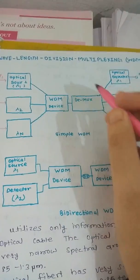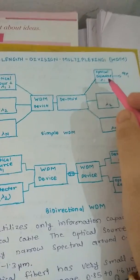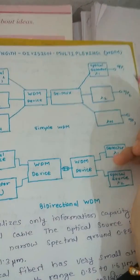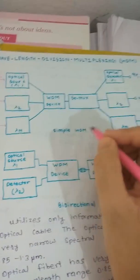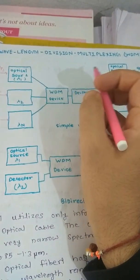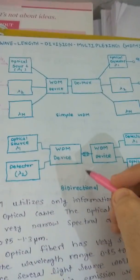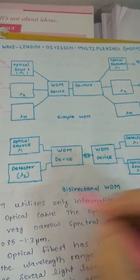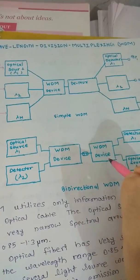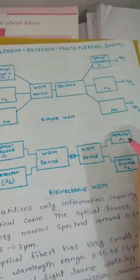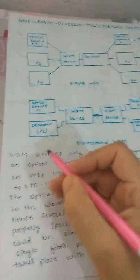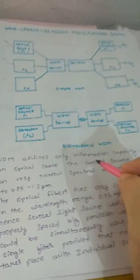These are connected to WDM devices, then demux, then optical detectors lambda 1 through lambda n - those are the outputs. This is simple WDM, that is wavelength division multiplexing. The second type is bi-directional WDM, with optical source, detector, WDM devices, bi-directional detector lambda 1, and optical source lambda 2.